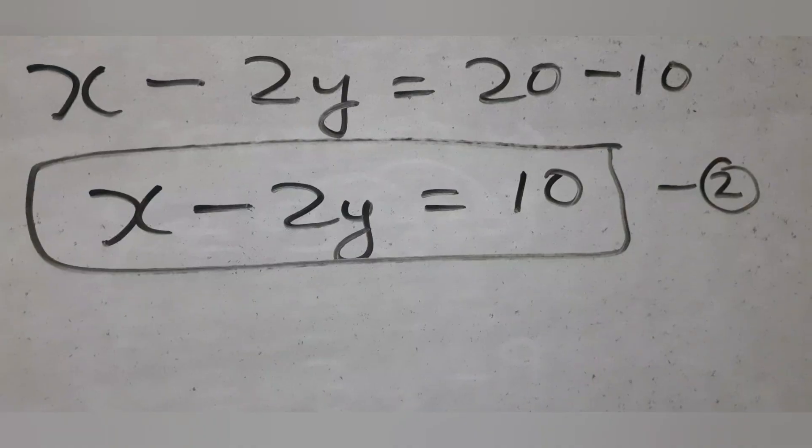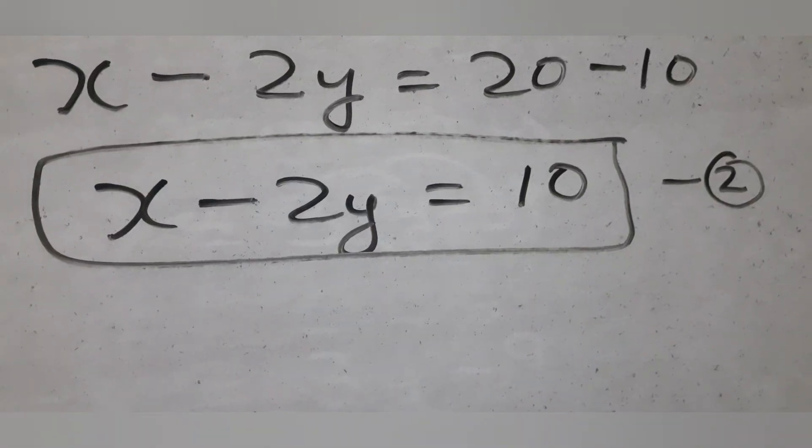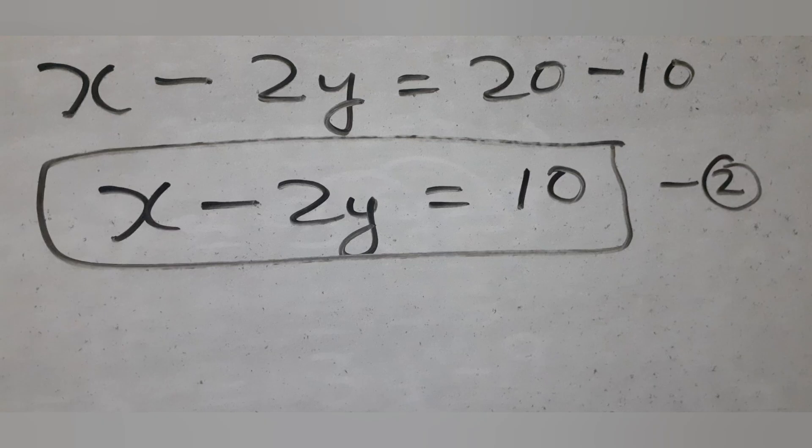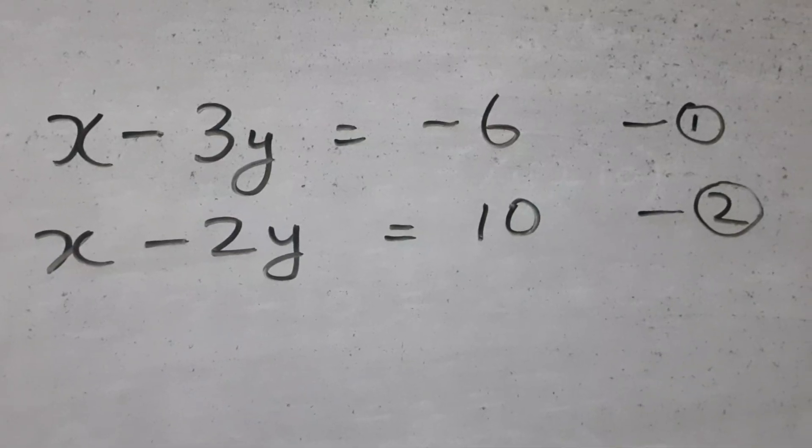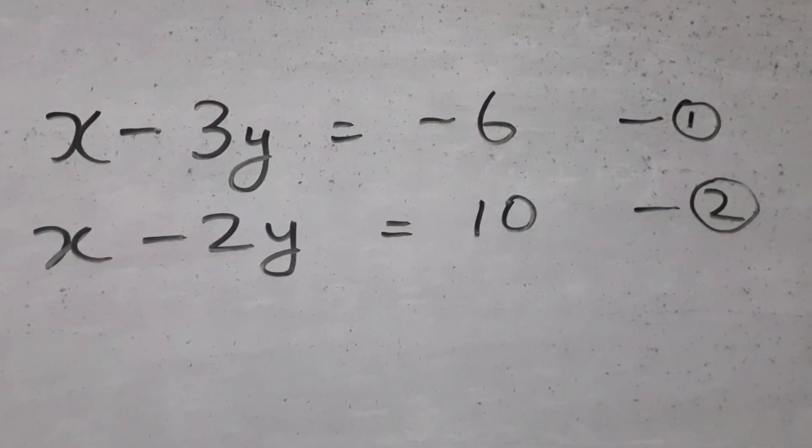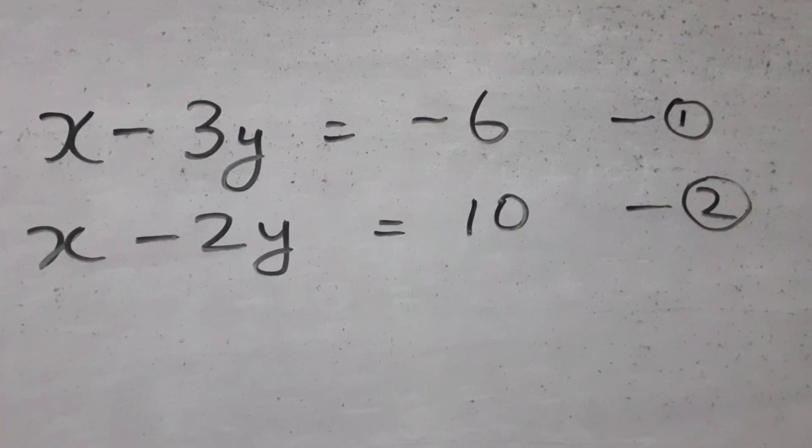So we get the second equation: x minus 2y equal to 10. We can use the elimination method to solve the equations. For eliminating x, we subtract the two equations.